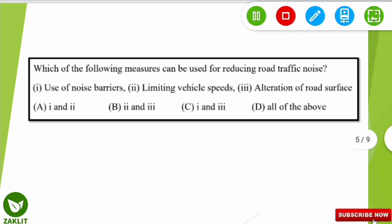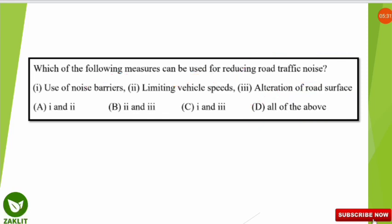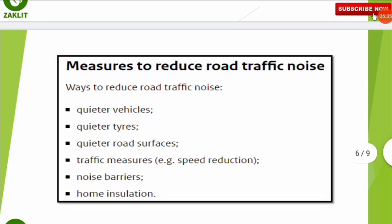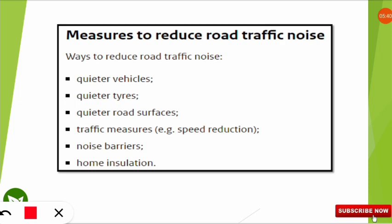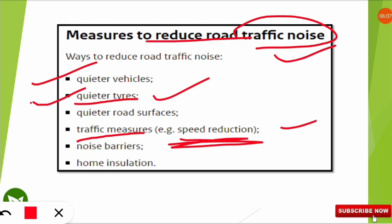The next question asks: which of the following measures can be used for reducing road traffic noise? Options include use of noise barriers, limiting the speed of vehicles, or alteration of the road surface. The correct answer is all of the above. As per the noise pollution control rules, measures include using quieter vehicles such as battery-powered vehicles, using quieter tires that do not produce much noise, and traffic measures such as speed reduction.